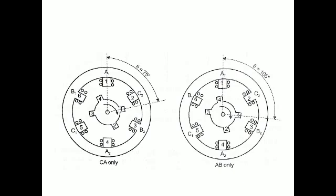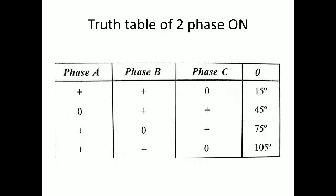By continuation, when C and A coils are activated, the rotor finds the position between A and C — that degree is 75 degrees. Repeating A and B gives the next step. This is the two-phase on mode; it is also full step and produces 30 degrees of step angle, but at different positions. See the table: A+B = 15°, B+C = 45°, A+C = 75°, A+B = 105°, and so on, completing 360 degrees in 12 steps.